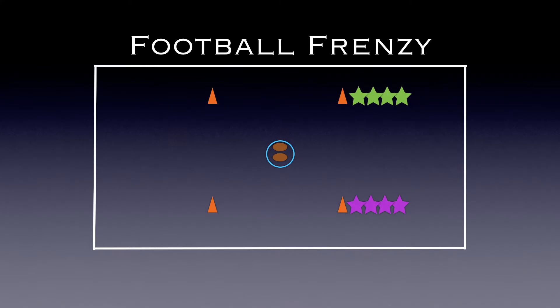On the signal, the first person in each line is going to run to the footballs and pick up their football. While they're doing that, the second person in line is going to run around the cone, try and catch a lead pass, and bring it back, place it into the hula hoop, and then go back to the back of the line. Everyone shuffles up and then continues on.